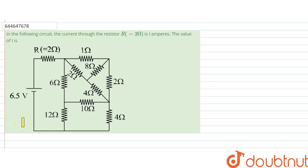Hello, we are given another question and the question says in the following circuit, the current through the resistor R equal to 2 ohm is 1 ampere. The value of I is what?